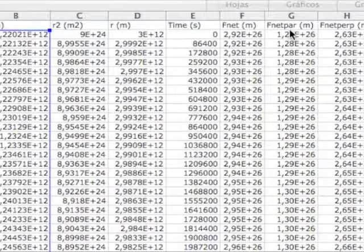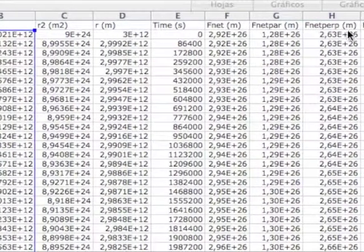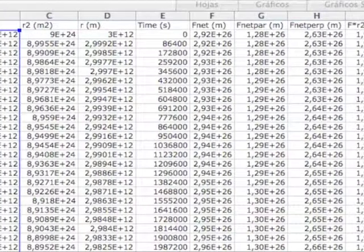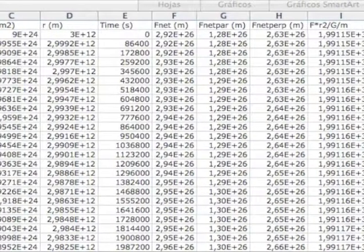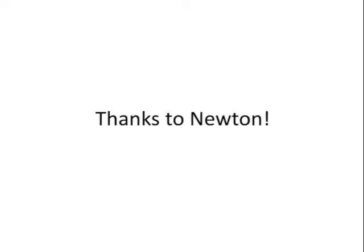Here we can see how I calculated all the values: r squared, r, time, F net, F net parallel, and F net perpendicular, calculated from the Python program. And also the mass of the black hole, which is 1.98 × 10^30 kg.